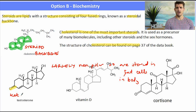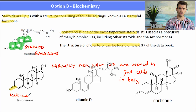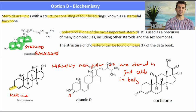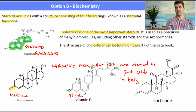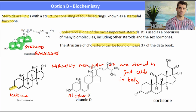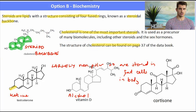Testosterone has a ketone functional group. Vitamin D has an alcohol functional group. And cortisone has a combination of ketone functional groups and alcohol functional groups.